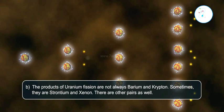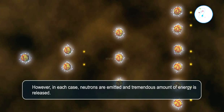Point B: The products of uranium fission are not always barium and krypton. Sometimes they are strontium and xenon. There are other pairs as well. However, in each case, neutrons are emitted and a tremendous amount of energy is released.